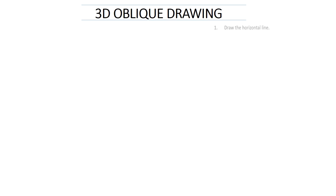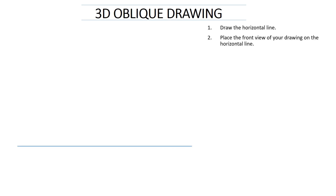The first step is drawing the horizontal line. Draw the horizontal line a bit to the bottom of your page. That's my horizontal line. Now place the front view of your drawing on the horizontal line. A very important fact is in grade 7 we are allowed only to draw the cube or the rectangular block in terms of our 3D oblique drawing. So in this regard we are going to be using the rectangular block.